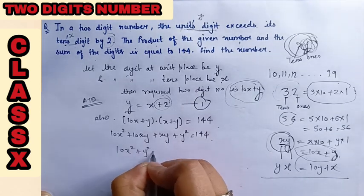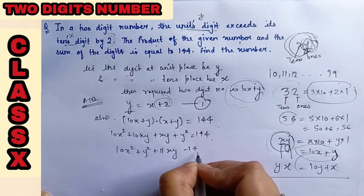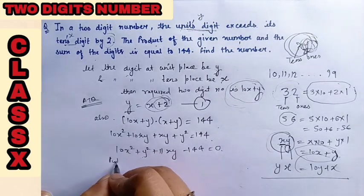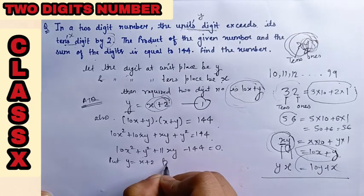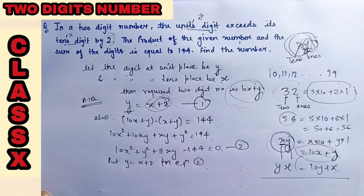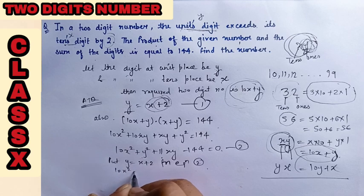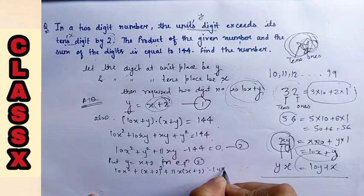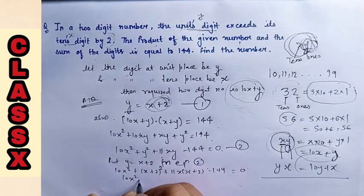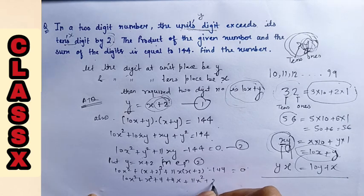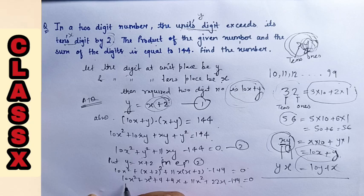So 10x square plus y square plus 11xy minus 144 equals 0. Now we have to put the value of y using substitution method. Put y equal x plus 2 in equation 2. On simplifying, 10 times x square plus 4 plus 4x plus 11x square plus 22x minus 144 equals 0. Now 10 and 11, 21x square.